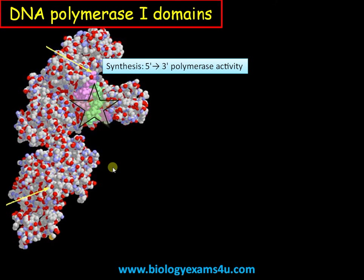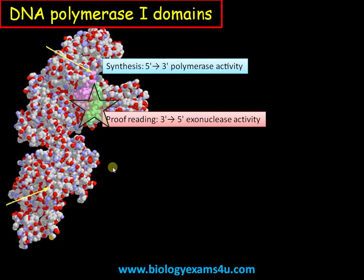The green region is the second domain, involved in proofreading or 3'-5' exonuclease activity. During the addition of nucleotides, if there is any mistake or a mismatched base pair is added, it should be replaced with the correct base pair. That activity is called proofreading activity or 3'-5' exonuclease activity.